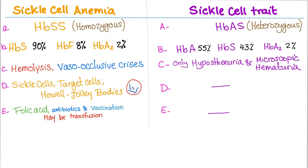Let's do a blood film or peripheral smear and look at the cells. In sickle cell anemia you will have sickle cells, target cells, as well as Howell-Jolly bodies, which are basophilic nuclear remnants in the red blood cells. This occurs because in sickle cell anemia you have functional asplenia — the spleen is useless — so it cannot remove these remnants. In sickle cell trait there are no sickle cells, no target cells, and no Howell-Jolly bodies because the spleen is still functioning.